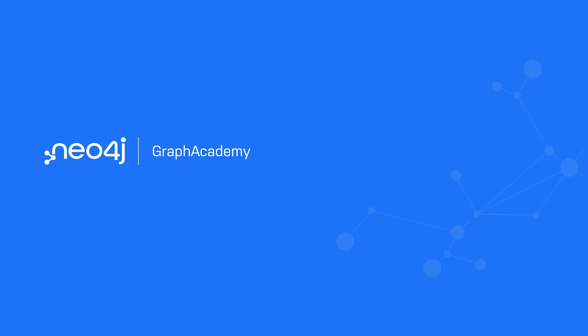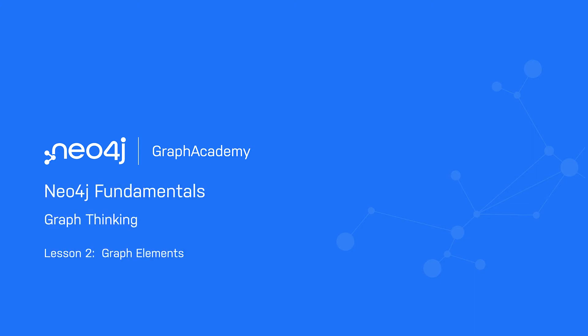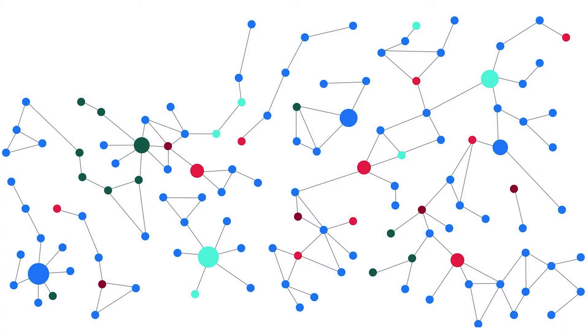In this lesson, we introduce you to the elements of graphs. The two elements of a graph are nodes, also known as vertices, and relationships, also known as edges.